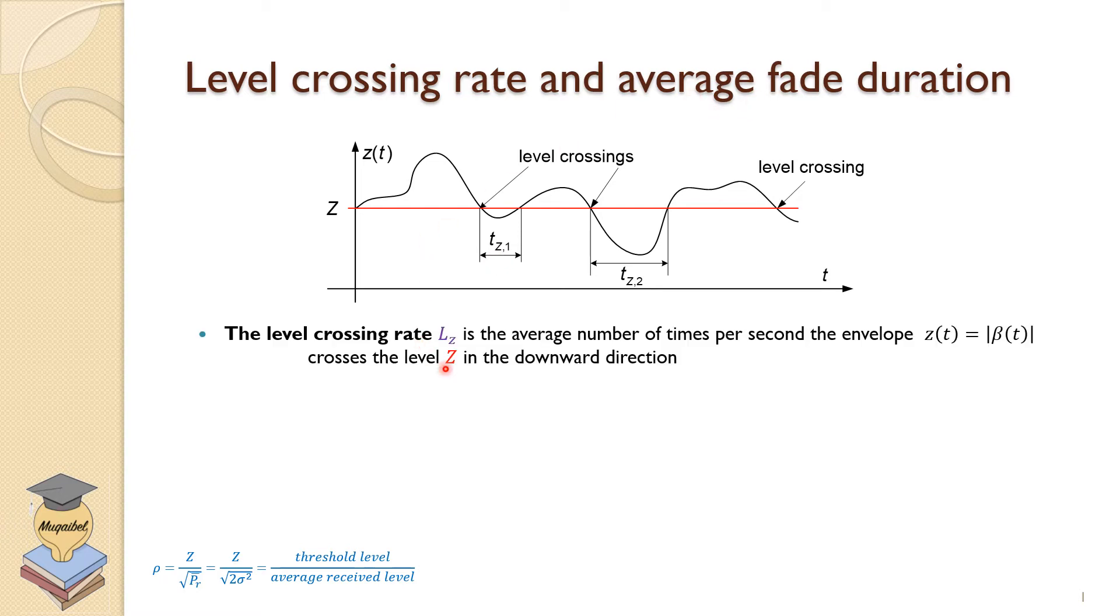So the level crossing rate, Lz, is the average number of times per second the envelope Z(t), that is the received power level, would cross the level Z, which is the reference value here, in the downward direction.